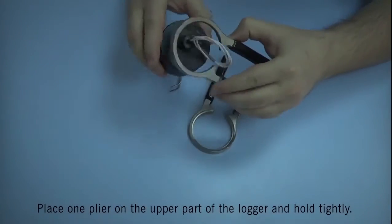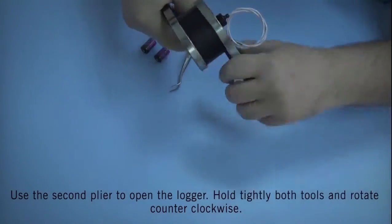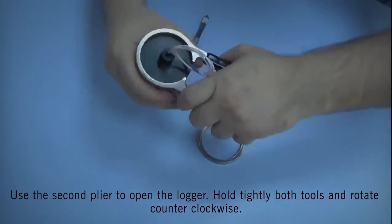Place one plier on the upper part of the logger and hold tightly. Use the second plier to open up the logger. Hold both tools tightly and rotate counter-clockwise.